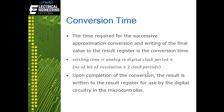The conversion time is the time required for the successive approximation conversion and writing of the final value to the result register. The settling time formula is: ADC clock period multiplied by (number of bits of resolution plus 2) plus an additional 2 clock periods. Mostly when we insert a delay of 10 microseconds it caters for the settling time. Upon completion of conversion the result is written to the result register for use by the digital circuitry.